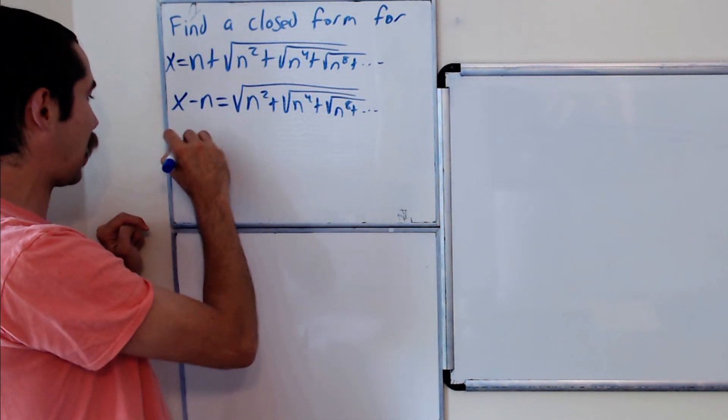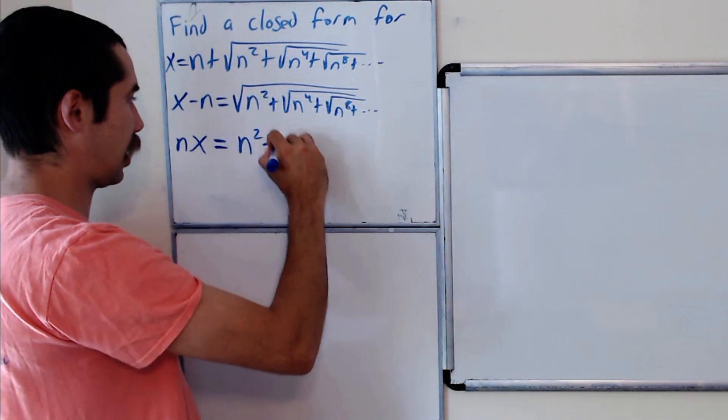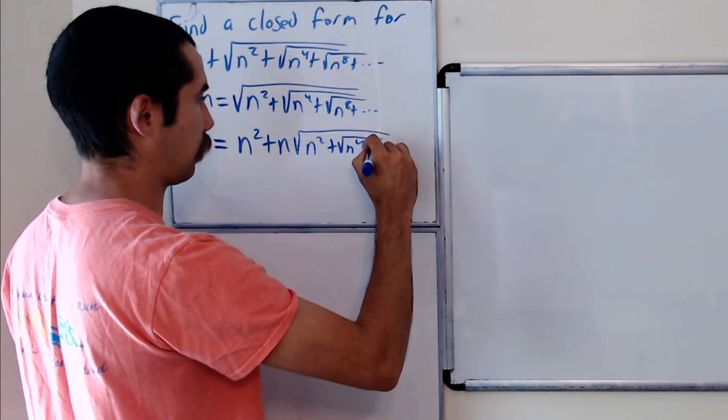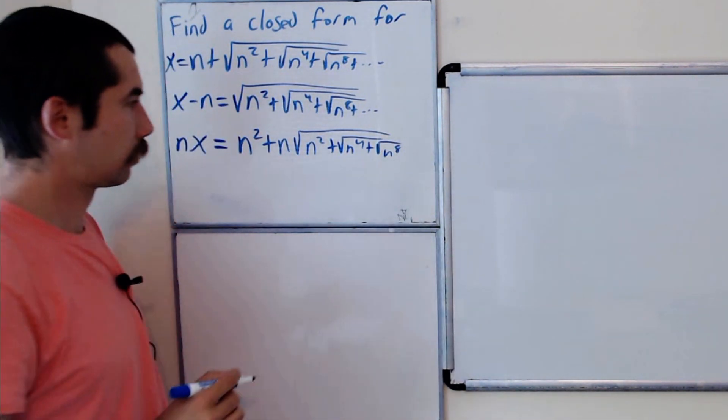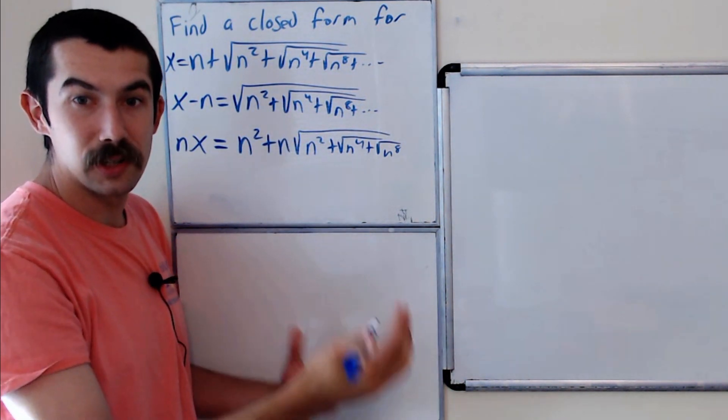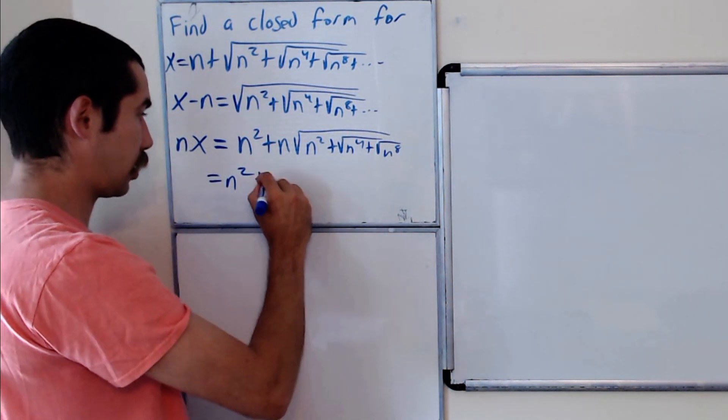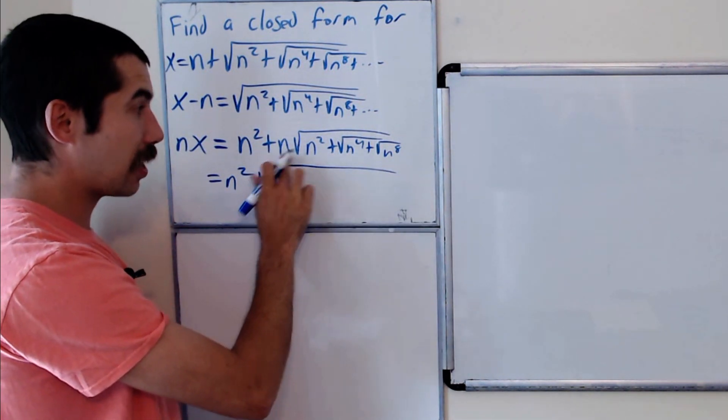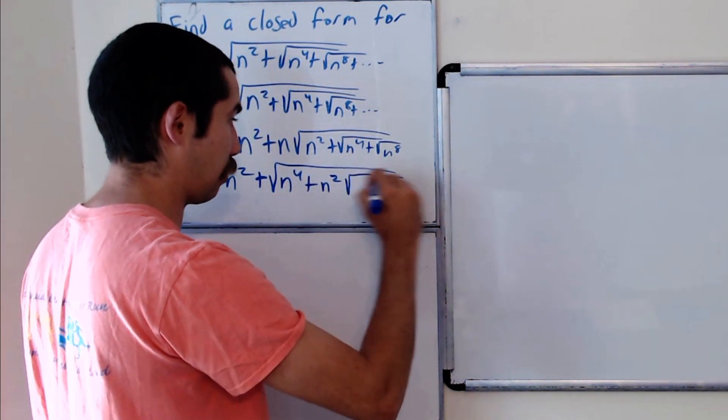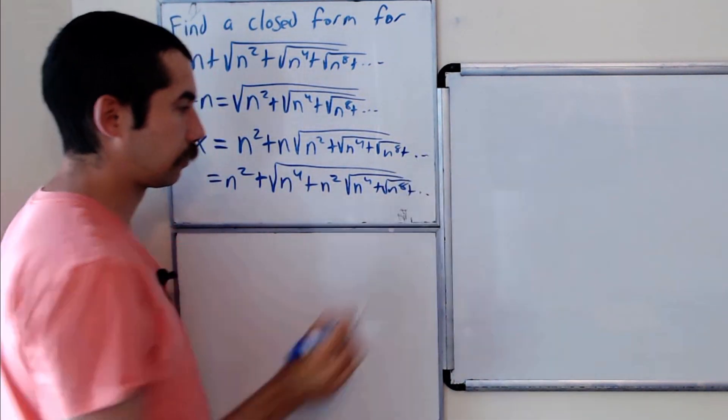Well, what happens if we multiply x by n? So nx is equal to n squared plus n square root of n squared plus square root of n to the fourth plus square root of n to the eighth and so forth. But we could bring this n inside of the square root and it comes as a square root of n squared. So xn is equal to n squared plus the square root of n squared times n squared is n to the fourth plus n squared times the square root of n to the fourth plus the square root times n to the eighth. And it goes on forever.